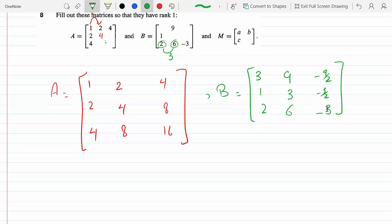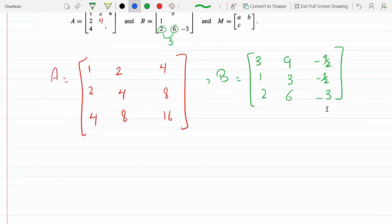And then, how about M? We need to have one pivot, so the first column has to have that pivot, right?